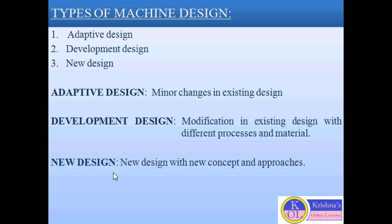The third type of design is new design. When a designer is creating something entirely new with a lot of research, creativity, technical approaches, and ability — but it is based on existing scientific approaches — this is considered a new design. A very common example of new design is solar systems, where solar power is replacing some other power systems.